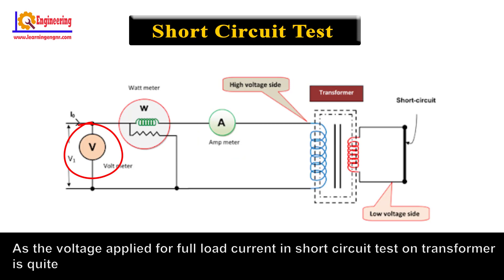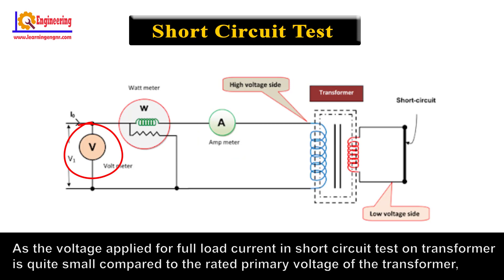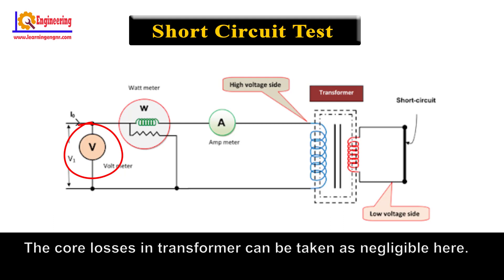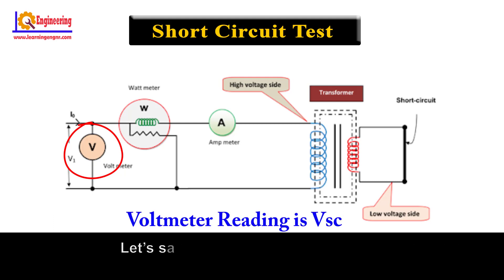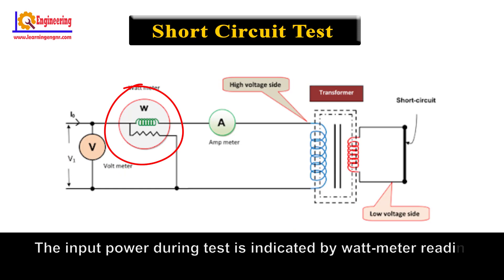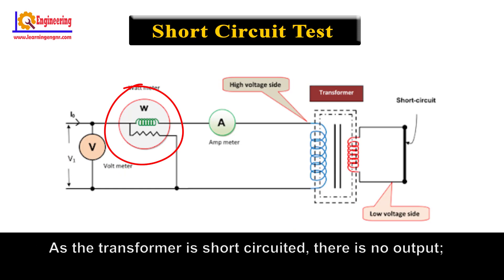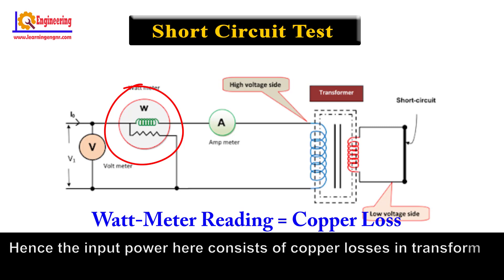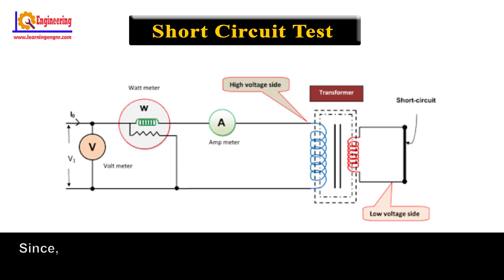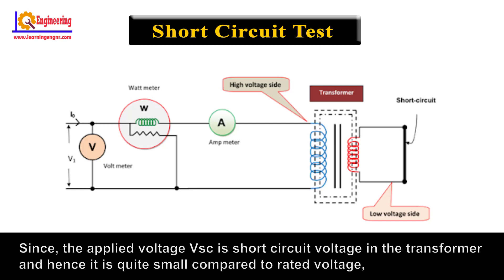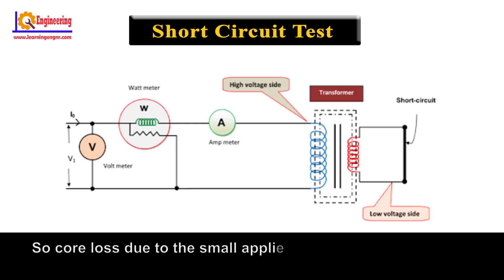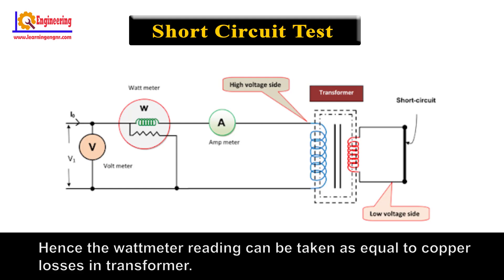As the voltage applied for full load current in the short circuit test on transformer is quite small compared to the rated primary voltage of the transformer, the core losses in the transformer can be taken as negligible. The voltmeter reading is VSC. As the transformer is short circuited, there is no output, hence the input power consists of copper losses in the transformer. Since the applied voltage VSC is quite small compared to rated voltage, core loss due to the small applied voltage can be neglected. Hence the wattmeter reading can be taken as equal to copper losses in the transformer.